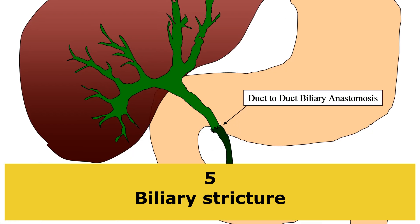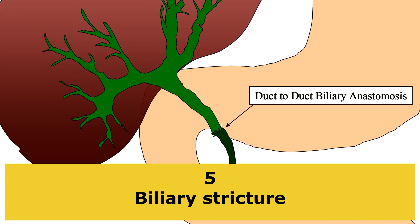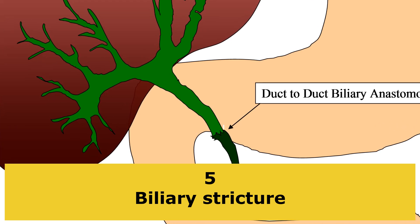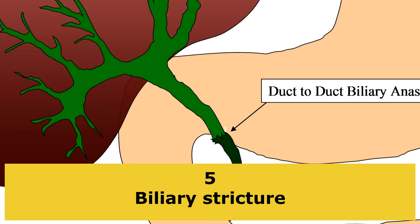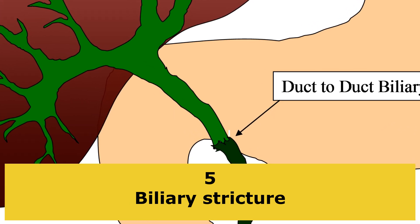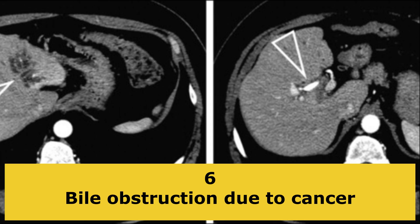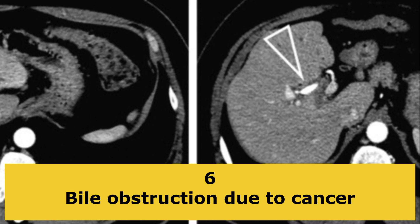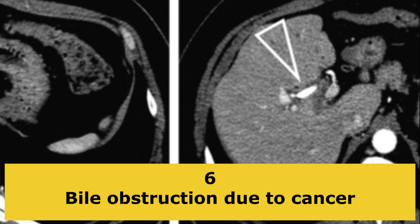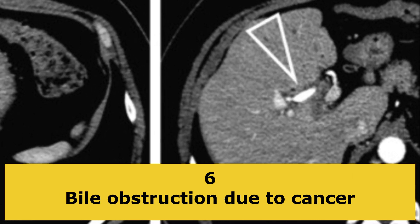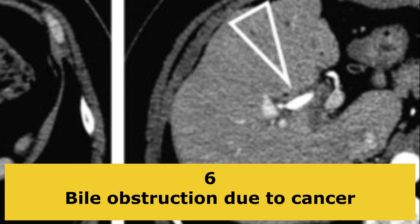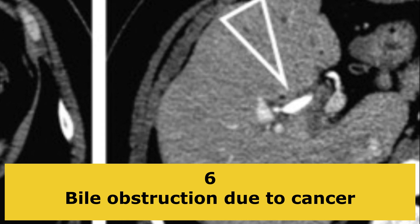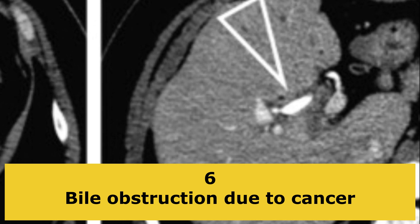Biliary stricture. This occurs when the bile duct becomes narrow or narrowed. Bile obstruction due to cancer. Certain cancers, including cholangiocarcinoma and adenocarcinoma of the head of the pancreas, can block your bile ducts or pancreatic ducts.